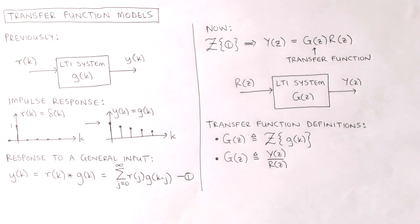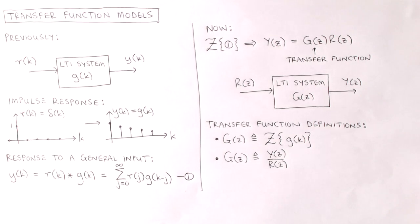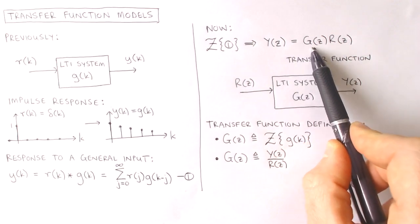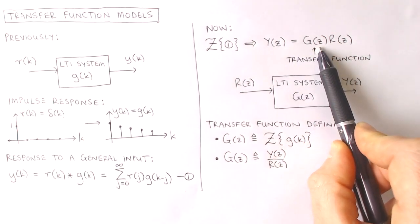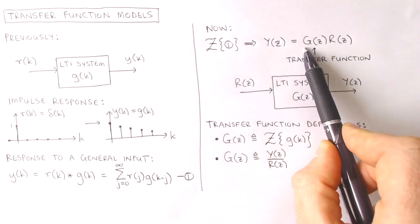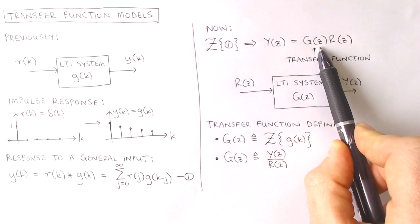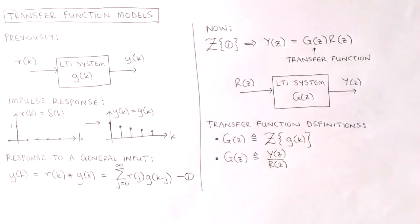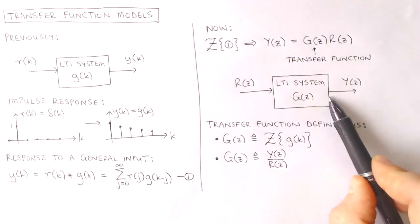We now apply the z-transform to both sides of equation one. It can be shown that discrete convolution in the time domain translates to multiplication in the z-domain, and therefore the z-transform of the output is given by the z-transform of the impulse response multiplied with the z-transform of the input. The z-transform of the impulse response is called the transfer function and is an alternative way to represent the dynamics of a system.